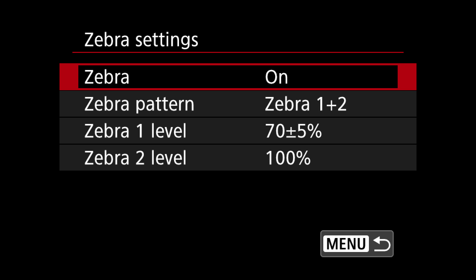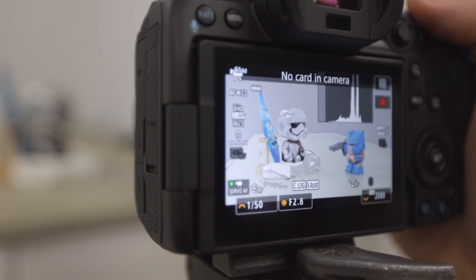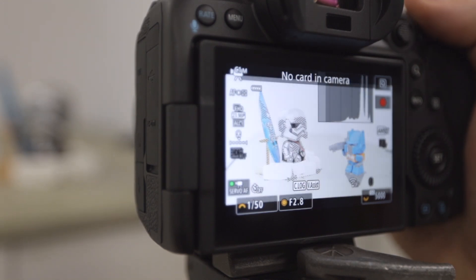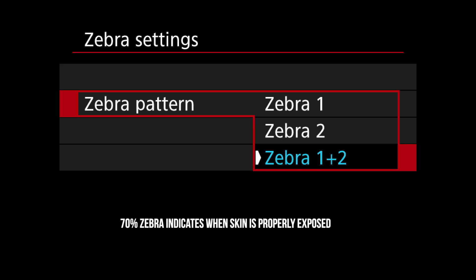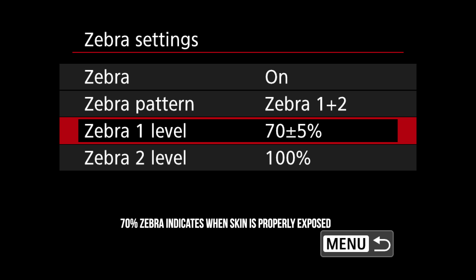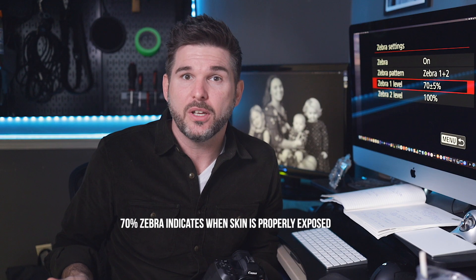One of the coolest features on this camera — typically only found in cinema cameras — is the Zebra settings. Essentially it shows you black-and-white stripes on any part of your picture that is blown out or where you've clipped the highlights. This is incredibly useful because this camera blows highlights pretty easily when you're in non-HQ modes. In this way you make sure you don't lose those highlights in your footage. I use Zebra modes 1 and 2 in conjunction with each other, set to the default, and I find it works pretty well.